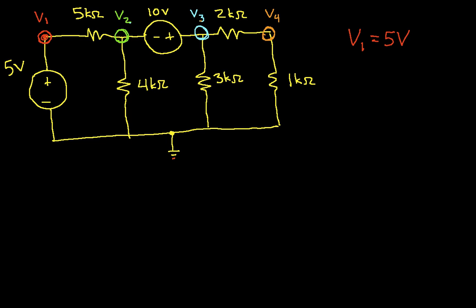This means that the voltage at node 1 will always be 5 volts. No matter what else happens in the circuit, this voltage source will keep the voltage at node 1 at 5 volts with respect to the reference node. So that was easy.